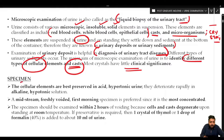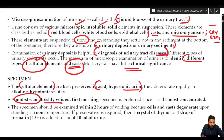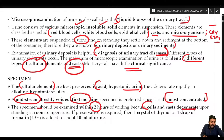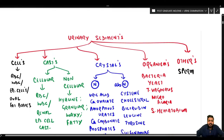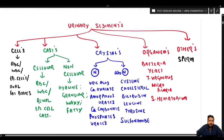The cellular elements of urine are best preserved in acid hypertonic urine and deteriorate rapidly in alkaline hypotonic solution. A midstream, freshly voided first-morning specimen is preferred since it is most concentrated. The specimen should be examined within two hours of voiding. If a preservative is used, one crystal of thymol or one drop of 40% formalin is added to around 10 ml of urine.